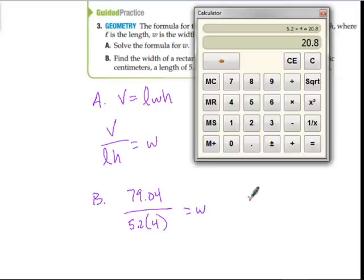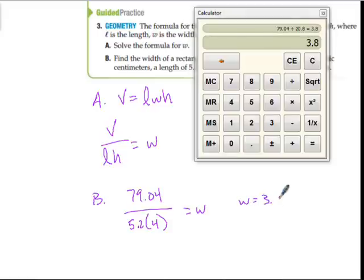And then this is a good example of a time when it's useful to have a calculator. So I could do 5.2 times 4, that's 20.8. So then 79.04 divided by 20.8, and I get 3.8 for the width. And let's be specific, those are centimeters. No problem.